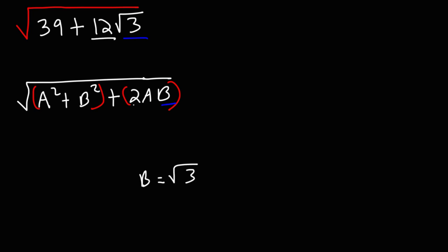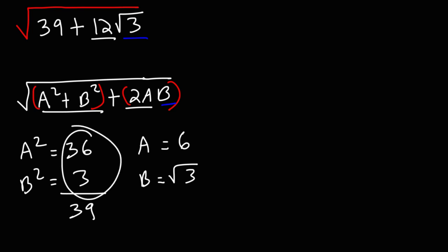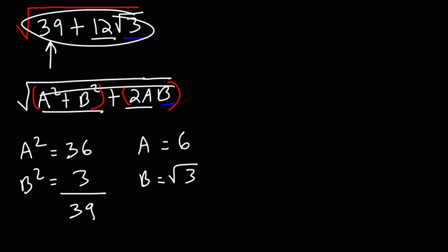That means 12 has to equal 2a. So 12 divided by 2 gives us a, which is equal to 6. So a squared is 6 squared, which is 6 times 6, equal to 36. And b squared: the square root of 3 times the square root of 3 is the square root of 9, which is 3. So a squared plus b squared: 36 plus 3 gives us 39. These numbers fit this formula.